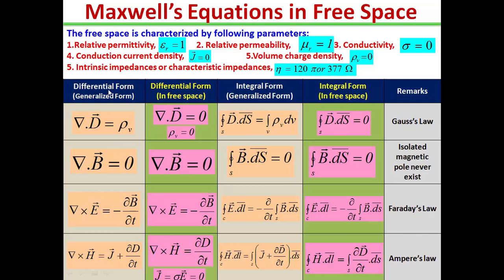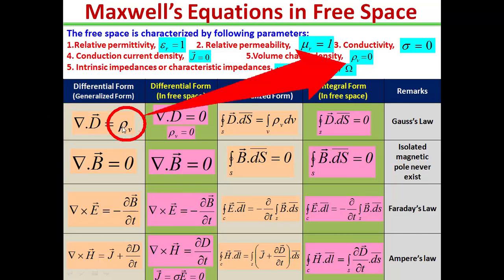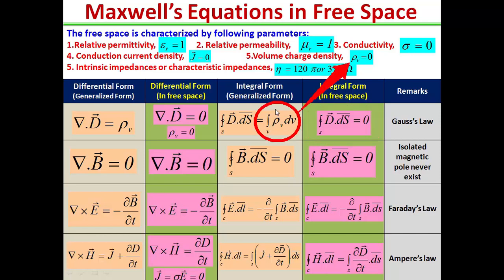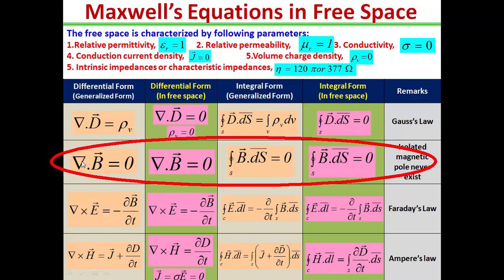In the differential form, the generalized first Maxwell equation is ∇·D = ρ_v. For free space, ρ_v = 0, so the first equation is modified to ∇·D = 0. In the integral form, it is modified as the closed surface integral D·dS = 0, because the right-hand side has a zero value. And Maxwell's second equation remains the same: ∇·B = 0.